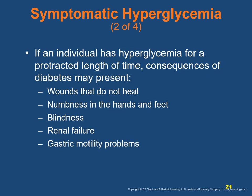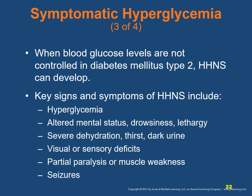If an individual has hyperglycemia for a prolonged period, consequences may include wounds that do not heal, numbness in the hands and feet, blindness, renal failure, and gastric motility problems. When blood glucose levels are not controlled in type 2 diabetes, a condition known as hyperosmolar hyperglycemic non-ketotic syndrome (HHNS) can develop.